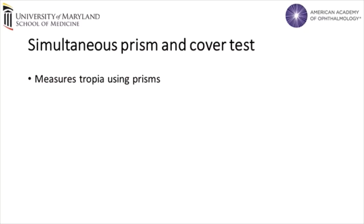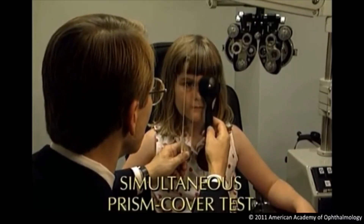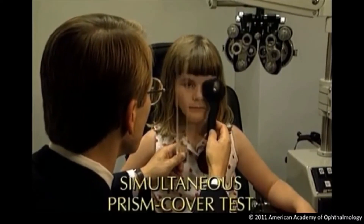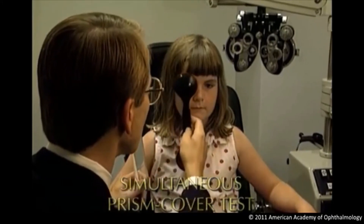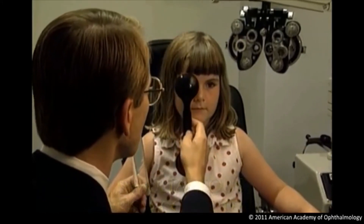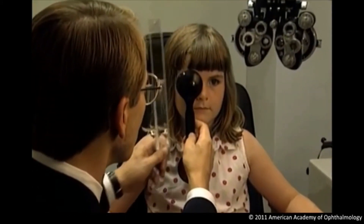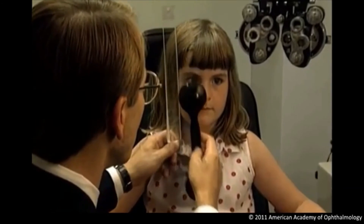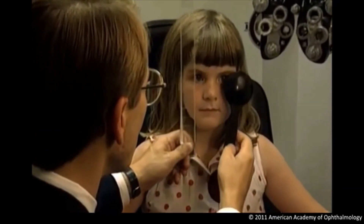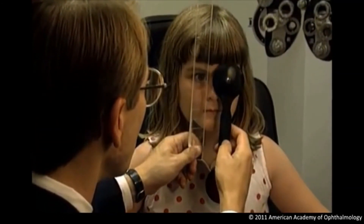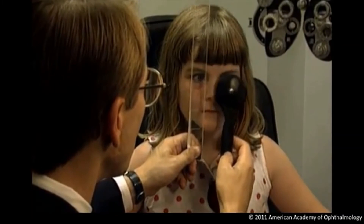While the alternate cover test measures total deviation, the simultaneous prism and cover test measures tropia only. The test is performed by simultaneously placing the occluder over the fixating eye and the prism over the deviating eye. The test is repeated using increasing prism powers until the deviating eye no longer shifts.